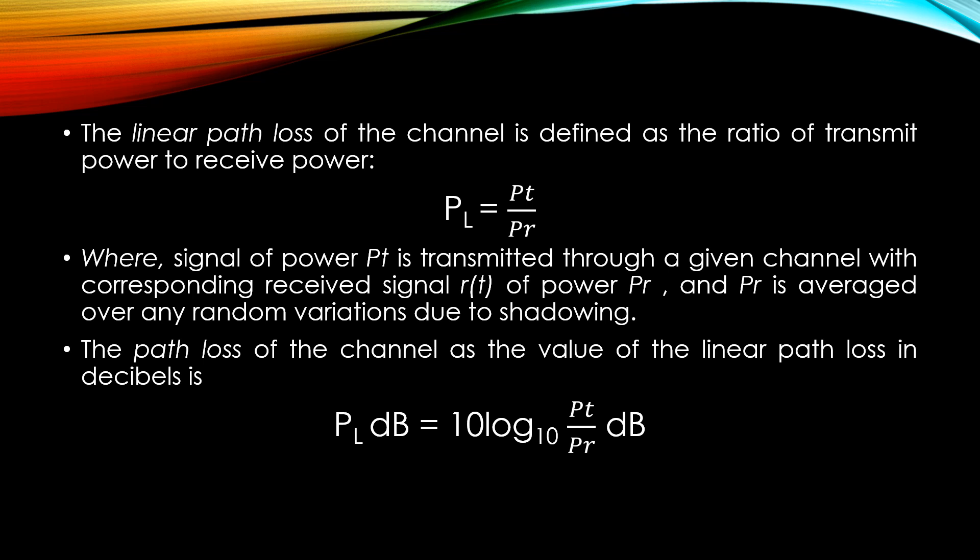The linear path loss of the channel is defined as the ratio of transmit power to received power. That is PL equal to Pt upon PR, where the signal of Pt is transmitted through a given channel with corresponding received signal of power PR, and PR is averaged over any random variations due to shadowing.